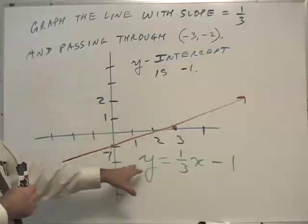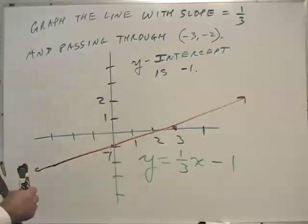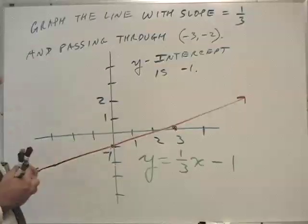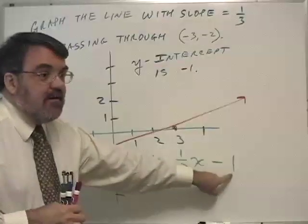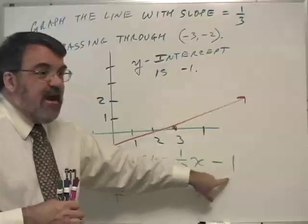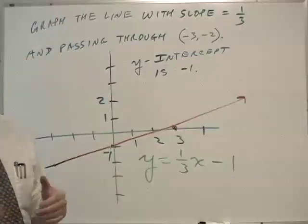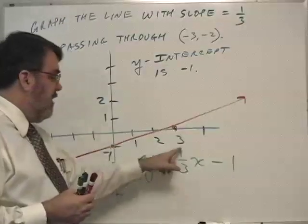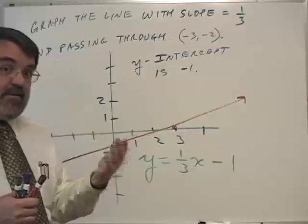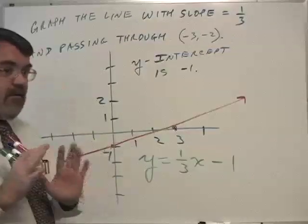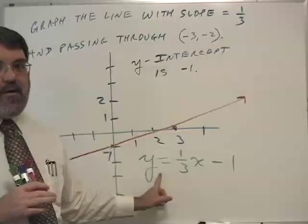The nice thing about this form of the equation is that it gives you the key information. Negative one, this number that's added or subtracted, is the y-intercept. So that defines the location. The number in front of x, 1/3, defines the slope.